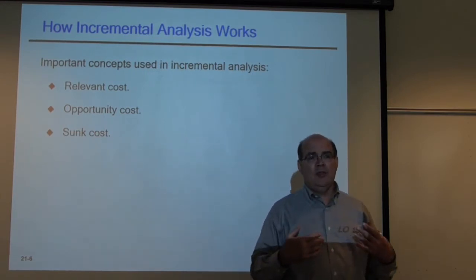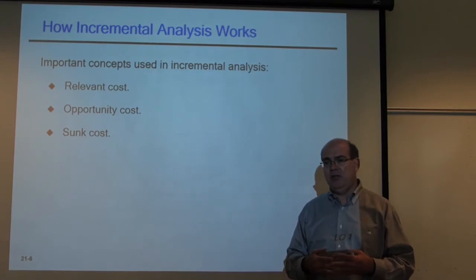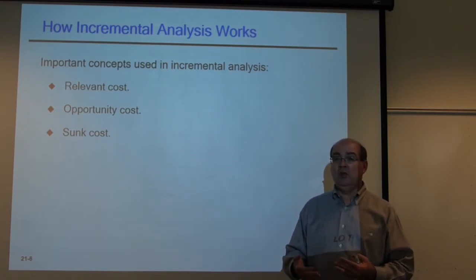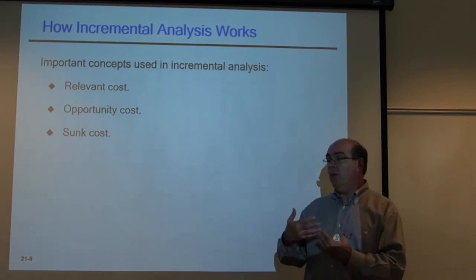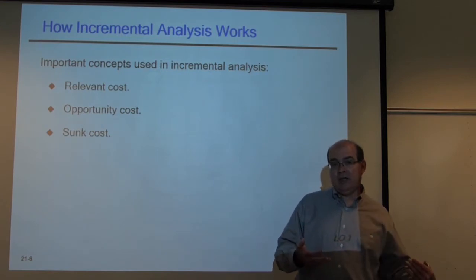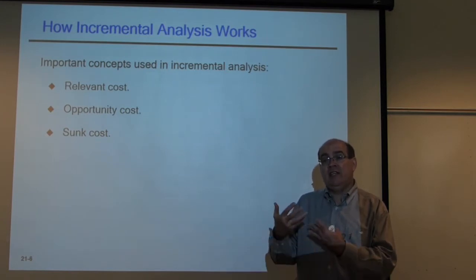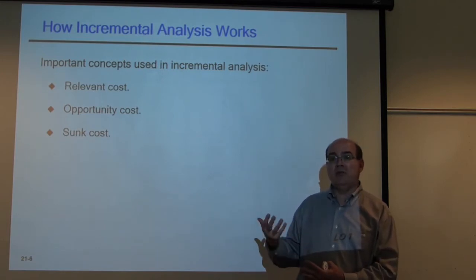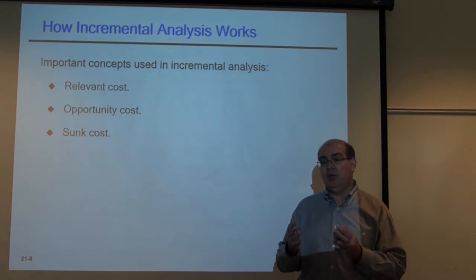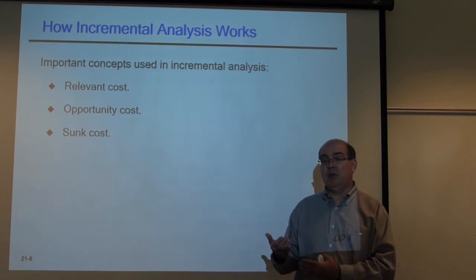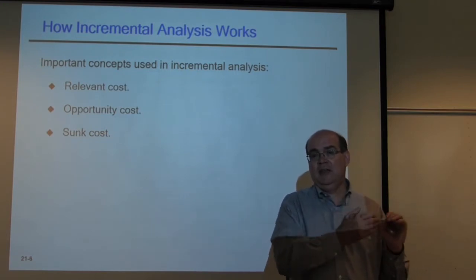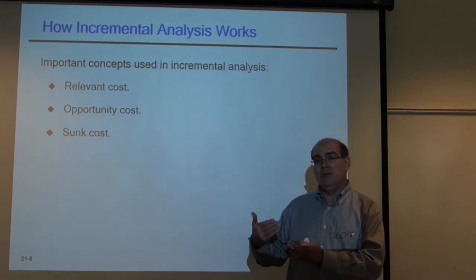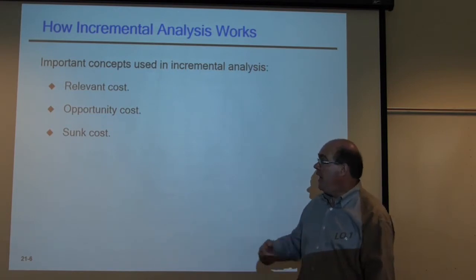Opportunity cost refers to the cost of not doing something. If a change frees up capacity and we could generate additional revenue, the book treats that as a cost on the option where we don't take advantage of it. So if we keep choice A and miss $38,000 in revenue, that's an opportunity cost added as an expense for choice A. In the real world you could show it as increased revenue for the other option, but the book chooses to show it as a cost where the opportunity was not taken.